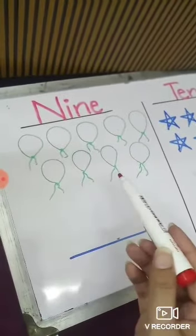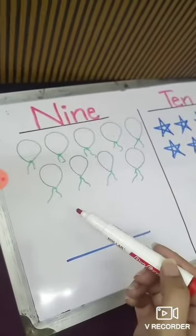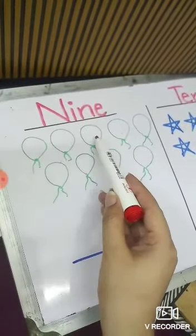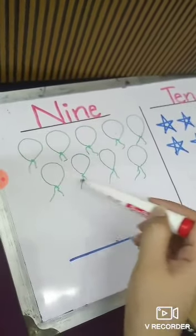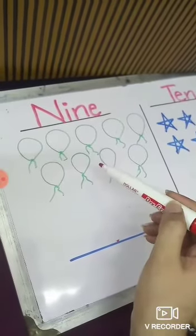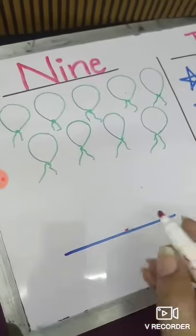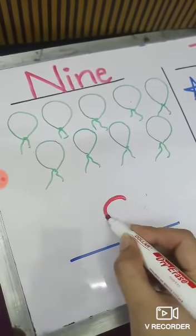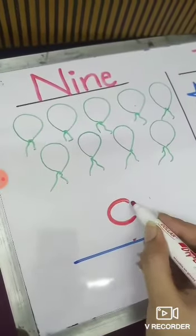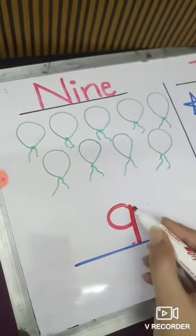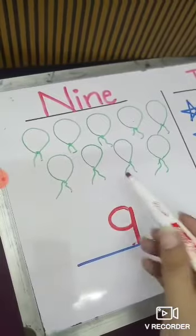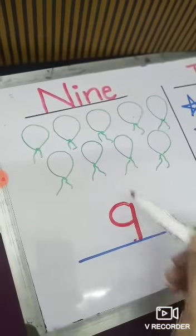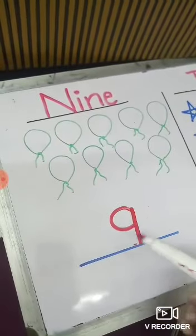First of all, please tell me — how many balloons on the board? Please count with me: 1, 2, 3, 4, 5, 6, 7, 8, 9. There are 9 balloons. This is number 9. Now I will tell you about the correct formation of number 9. First, make a curve like this, then a standing line — 9. This is called 9. There are 9 balloons on the board and the number is 9.